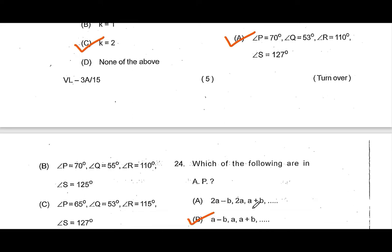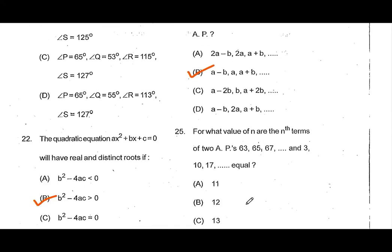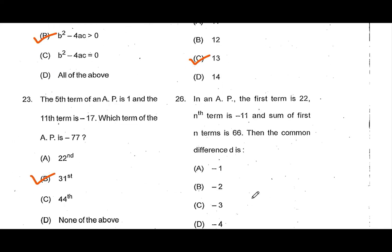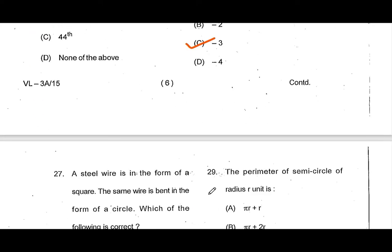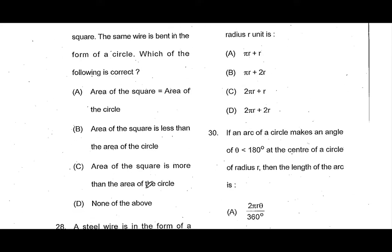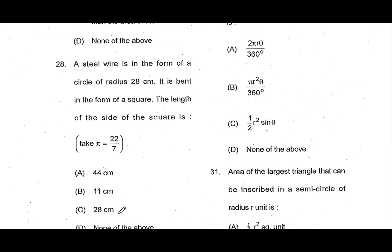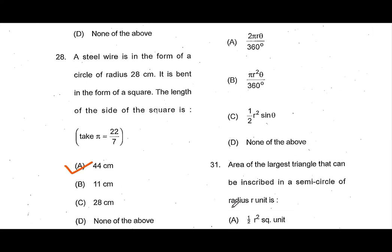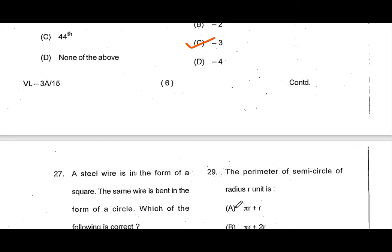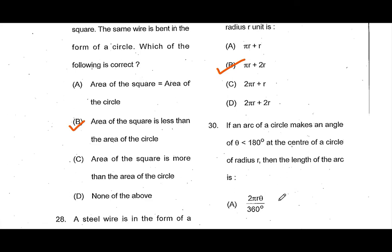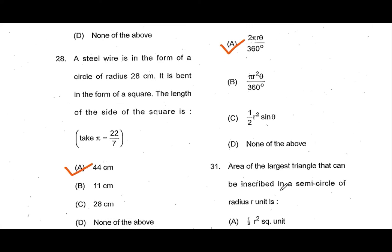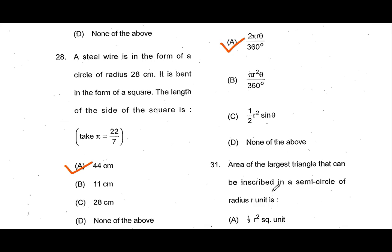Question number 24, answer option B. Question number 25, answer option C. Question number 26, answer option C. Question number 27, answer option B. Question number 28, answer option A. Question number 29, answer option B. Question number 30, answer option A.